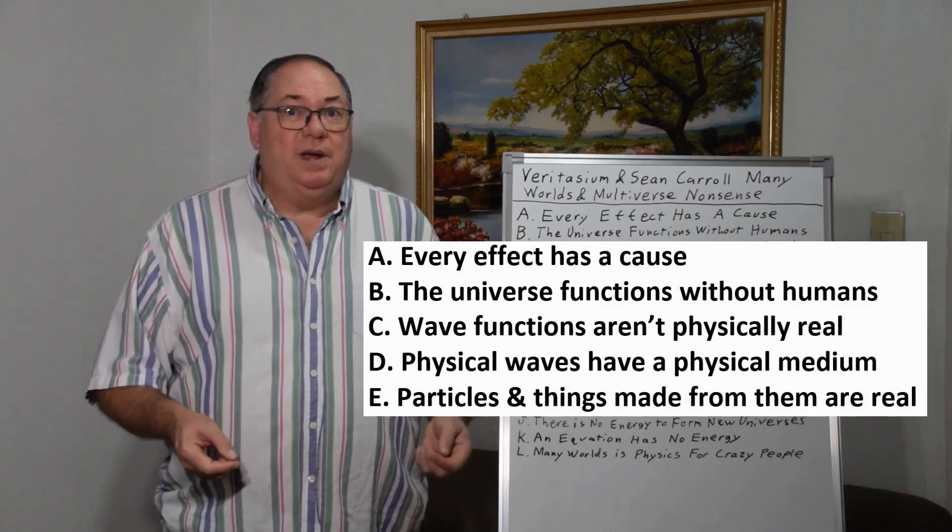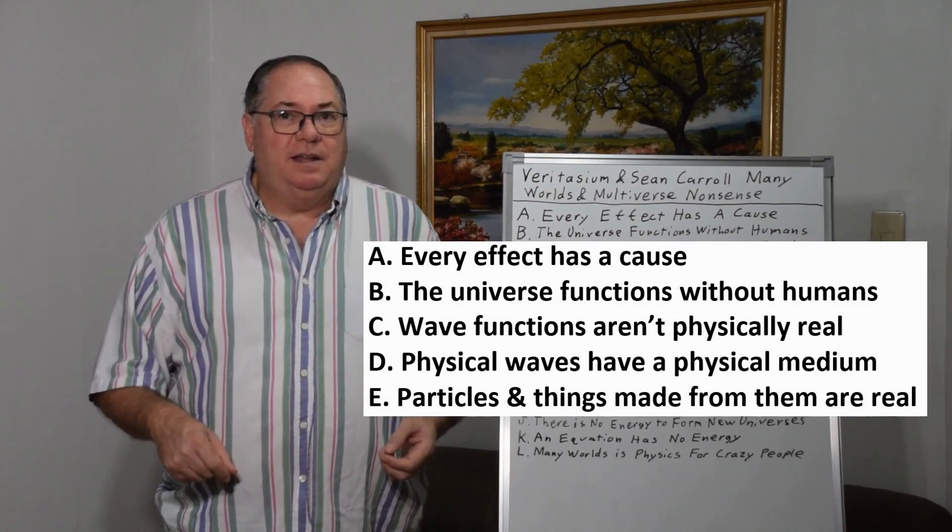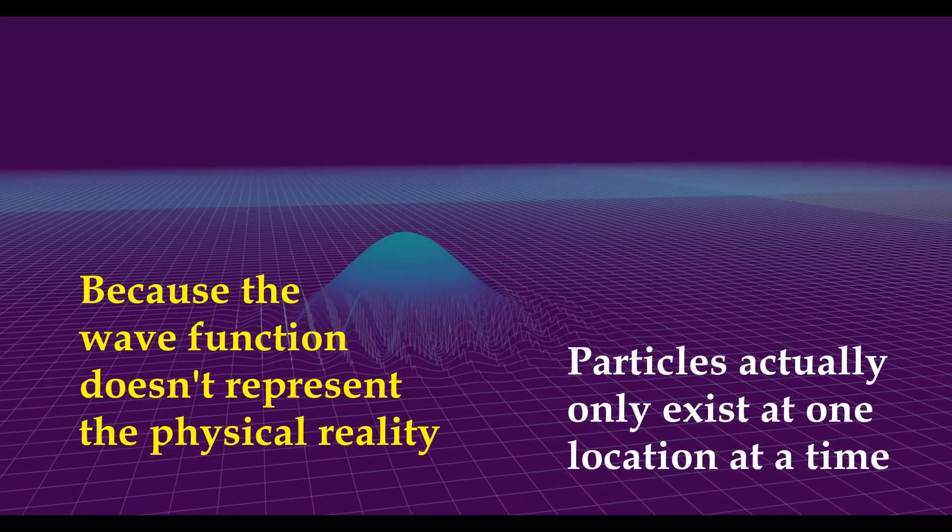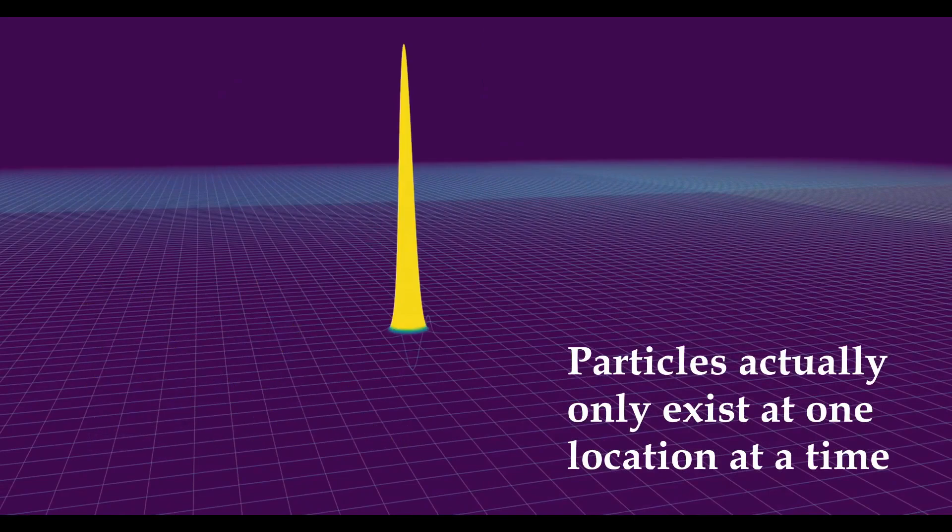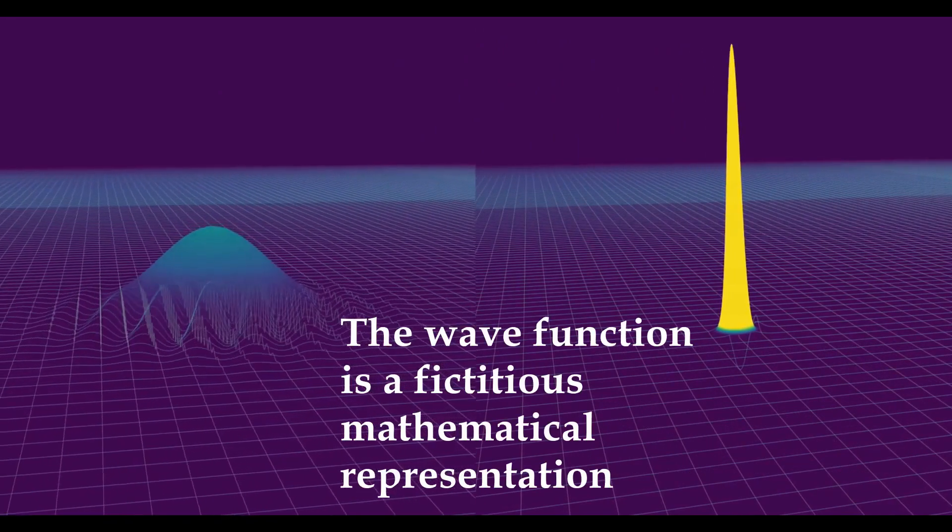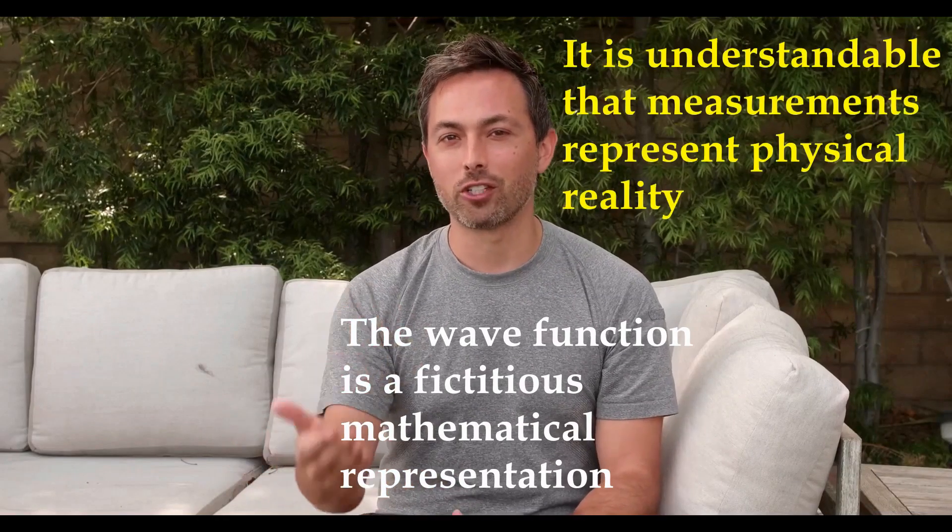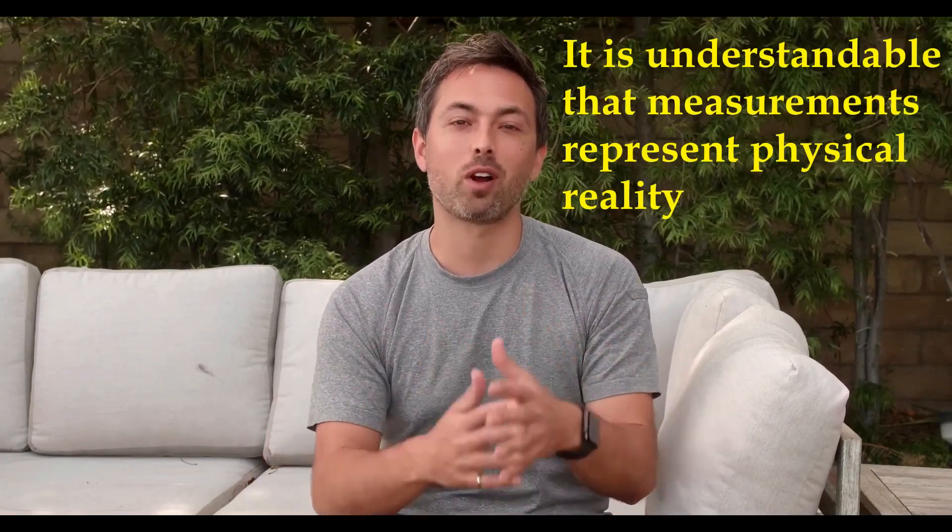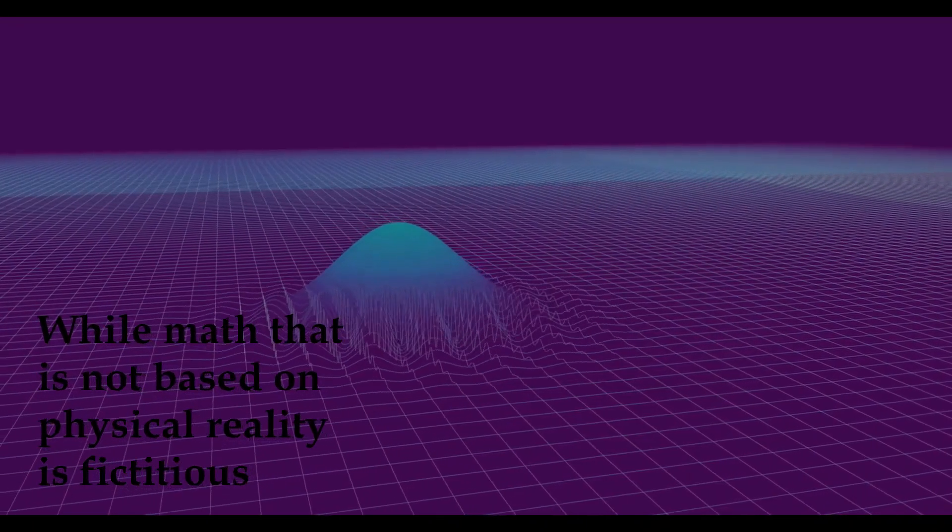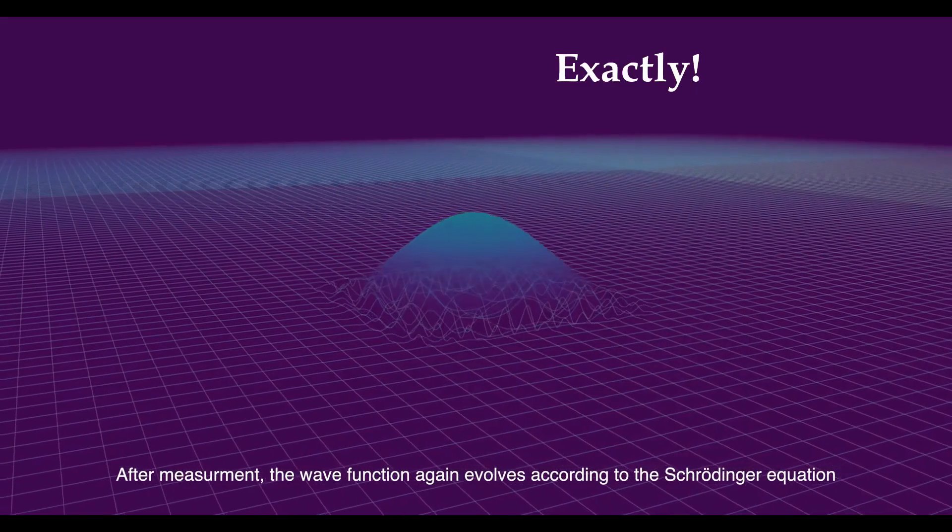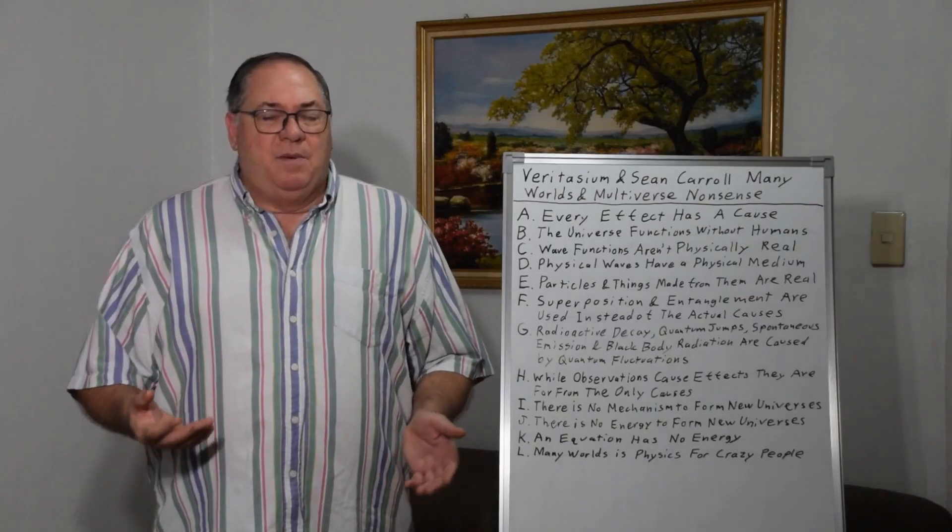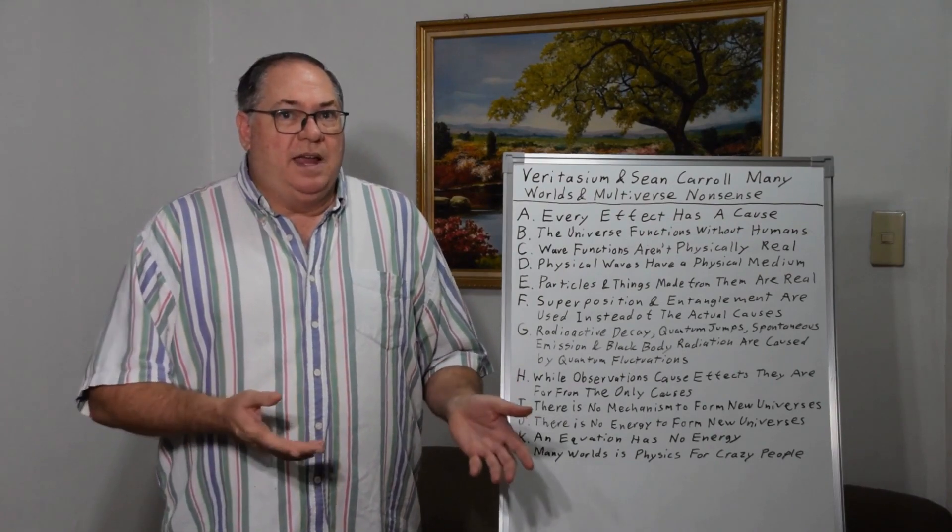With that I'll let Derek give his introduction. [Clip plays]: 'In quantum mechanics we never actually observe the wave function like this. Instead when we measure it we find the particle at a single point in space. So how are we to reconcile the spread out wave function evolving smoothly under the Schrödinger equation with this point-like particle detection?' Well, as you can already see, he's already gone against all the sensical physics that I already discussed.